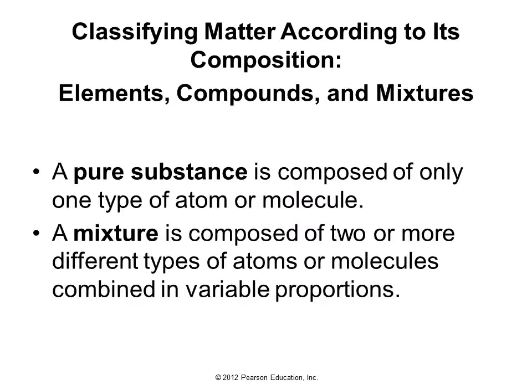We can classify matter according to composition. Matter is either elements, compounds, or mixtures. A pure substance is made up of only one type of atom or molecule. A mixture is composed of two or more different kinds of substances combined in various proportions — two to one, five to one, it doesn't matter.